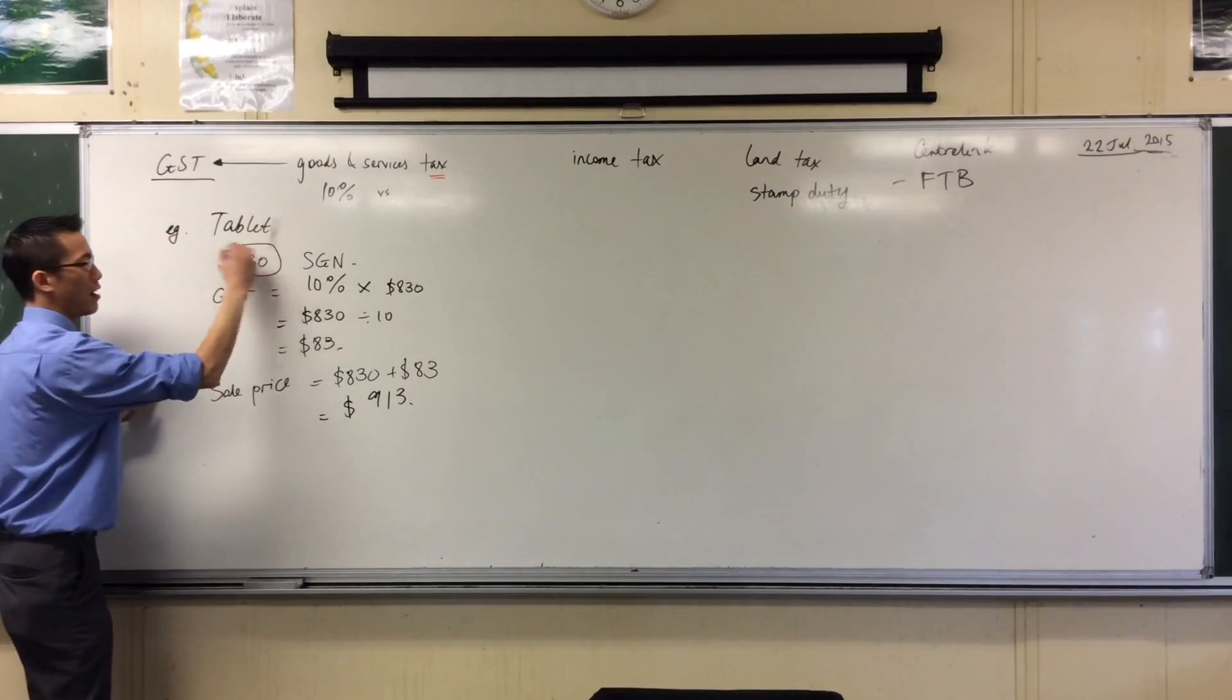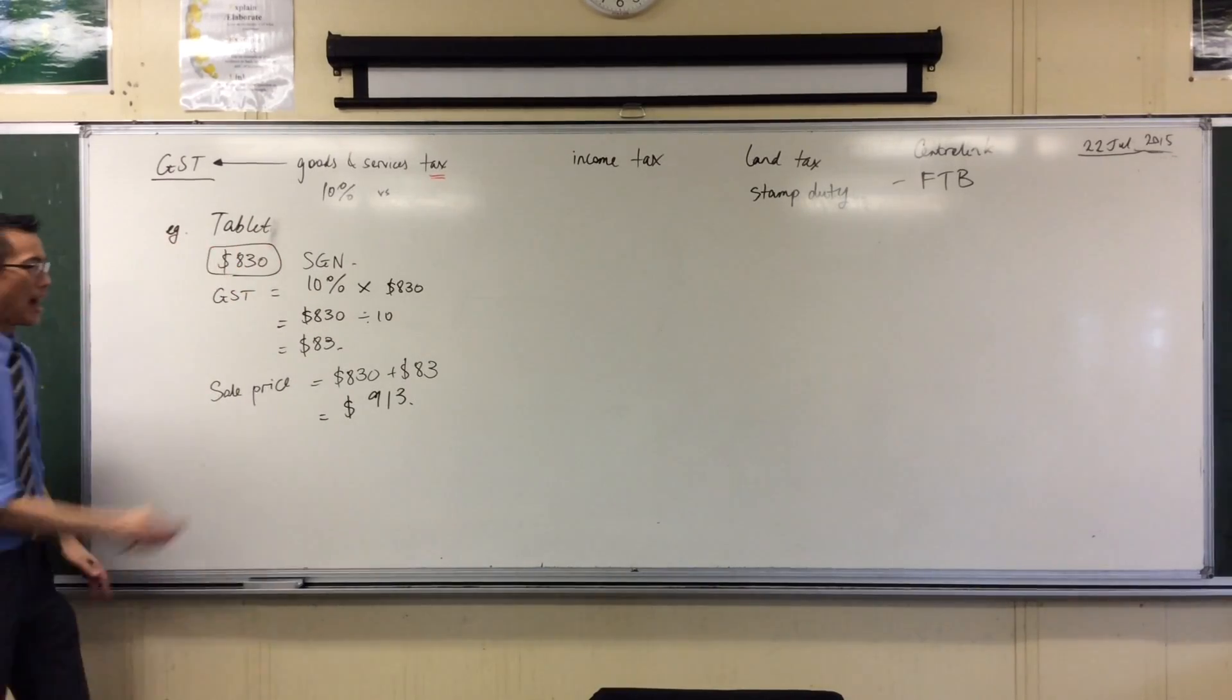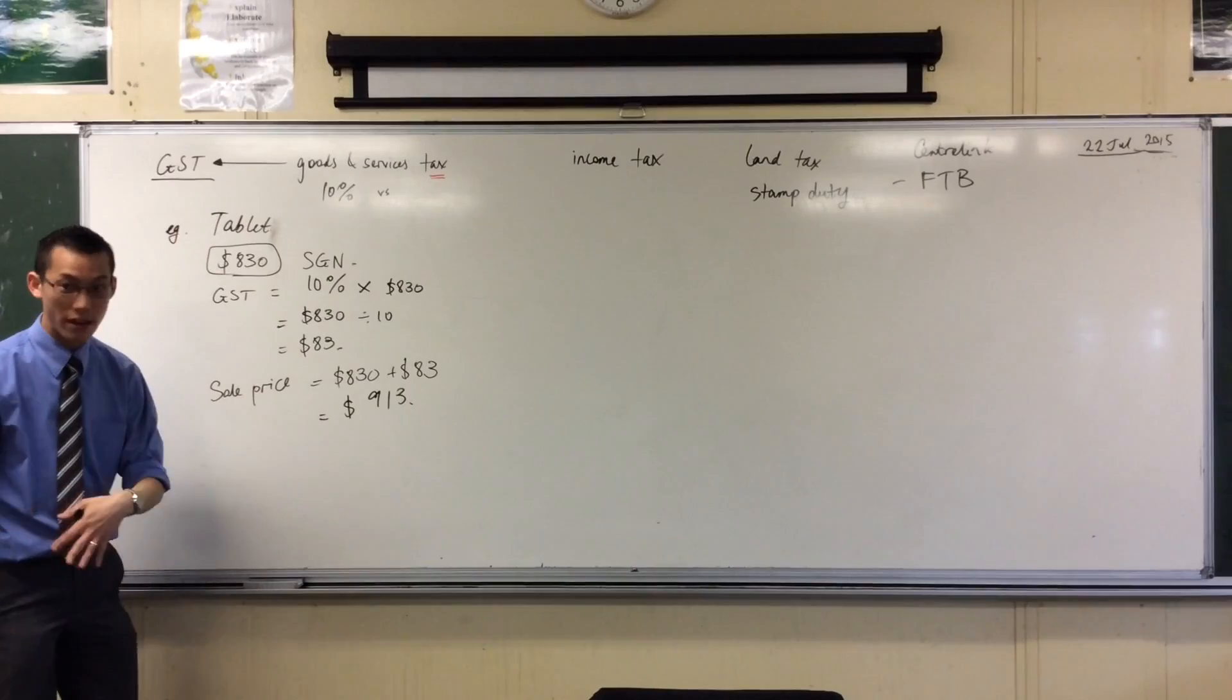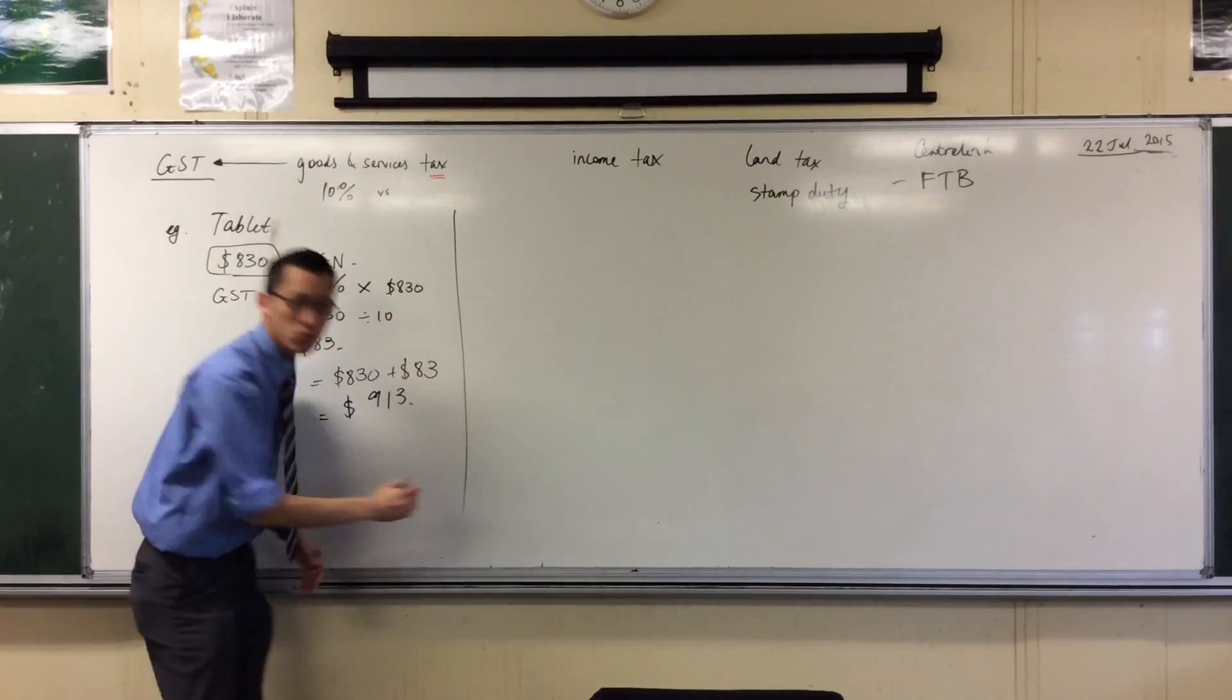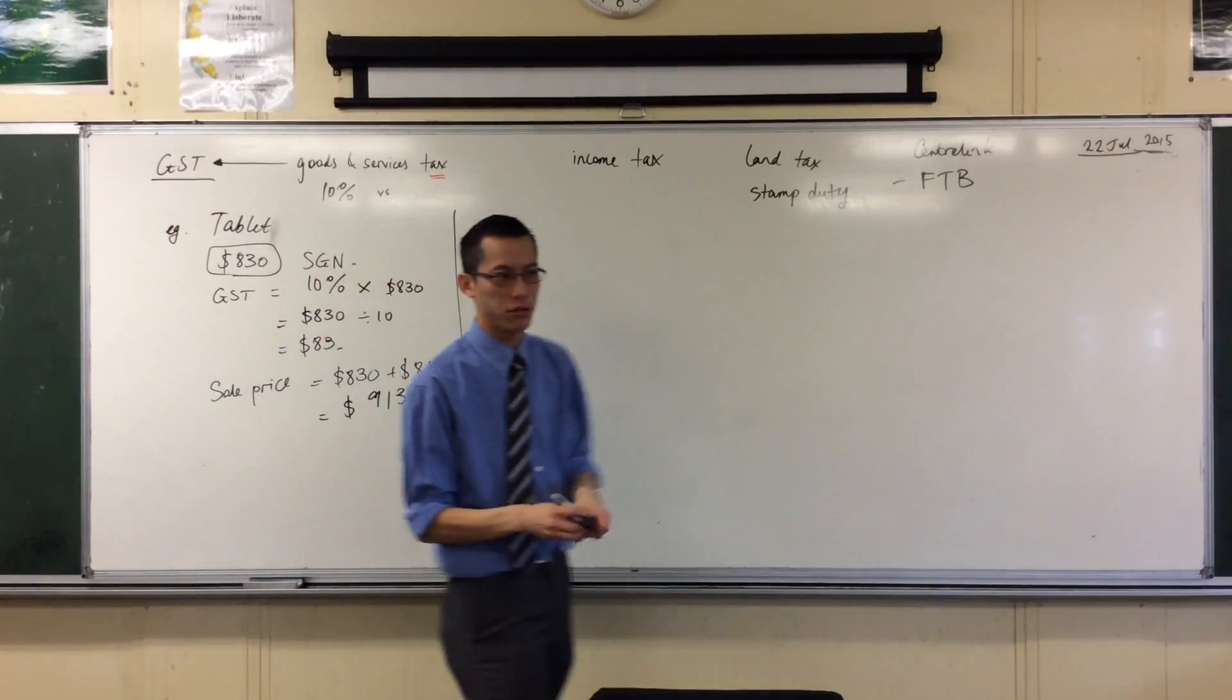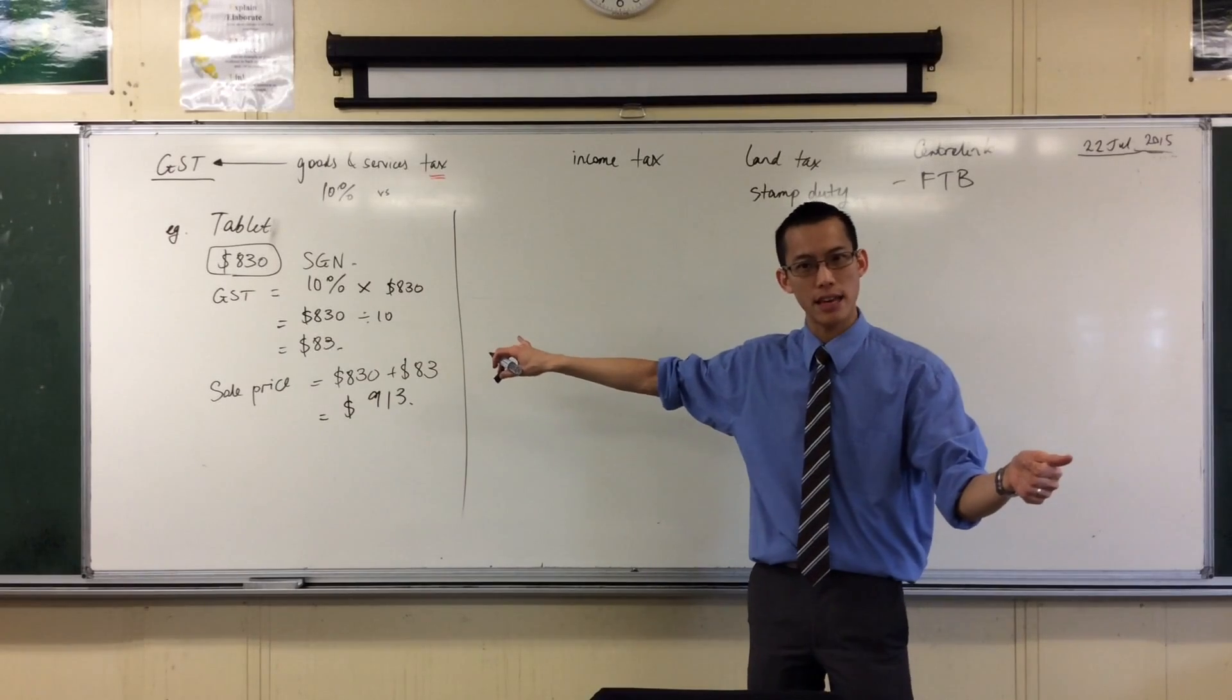Like I said, this amount is how much it actually costs, and then tax gets added on. But in Australia, as I mentioned, usually GST is just included on the label. It's there. You don't have to do this calculation.